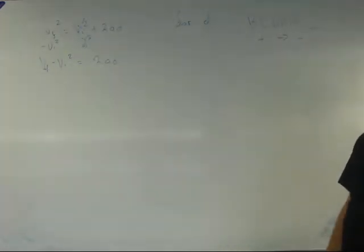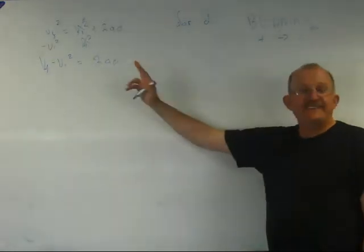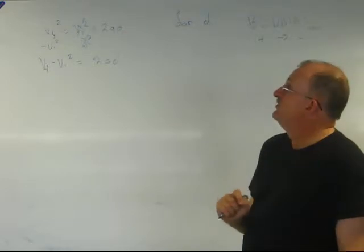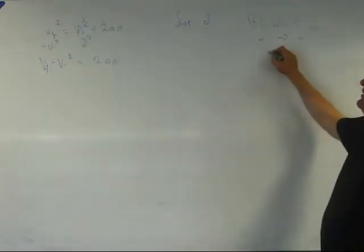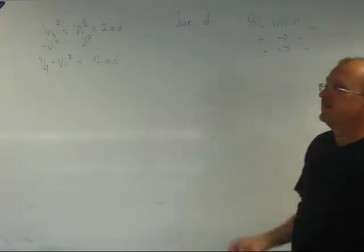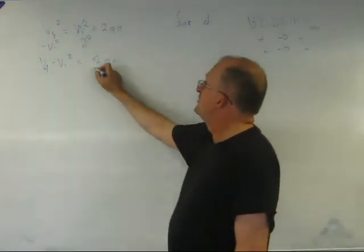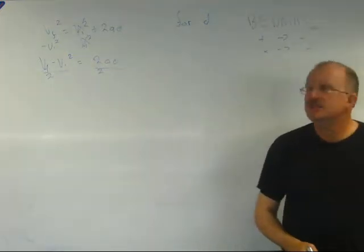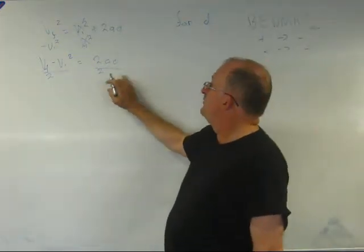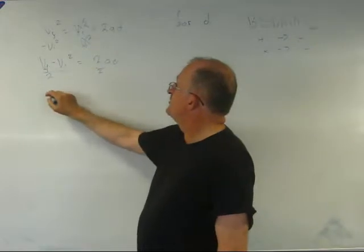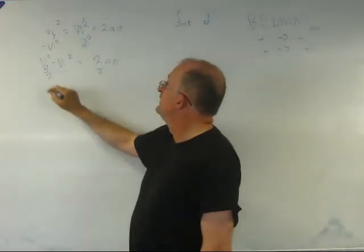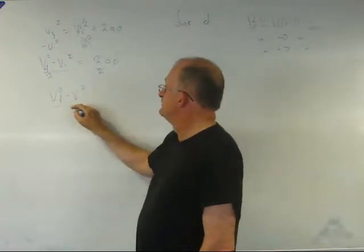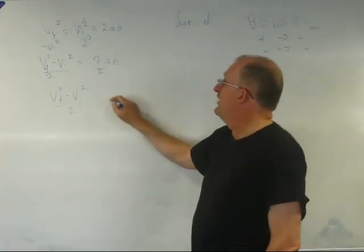We've got 2 and a both multiplying d. So what's the opposite of multiplication? Division. So I'm going to divide this side by 2. If I divide both sides by 2, it cancels out. So we now have Vf squared minus Vi squared equals ad.